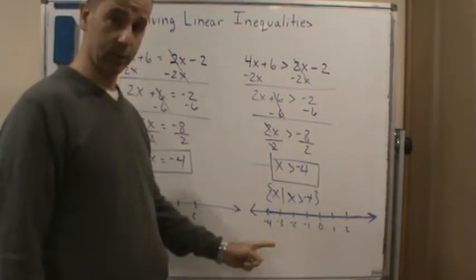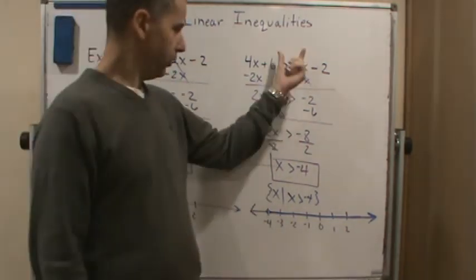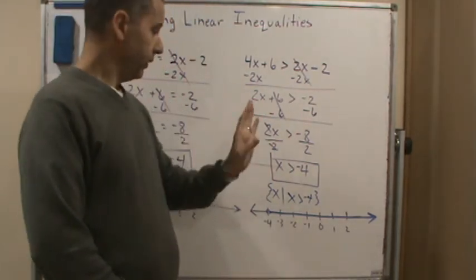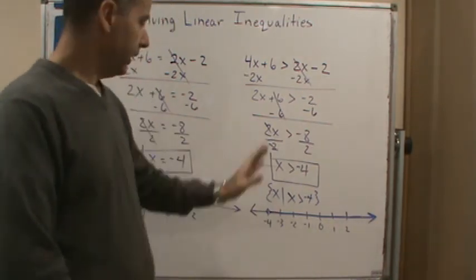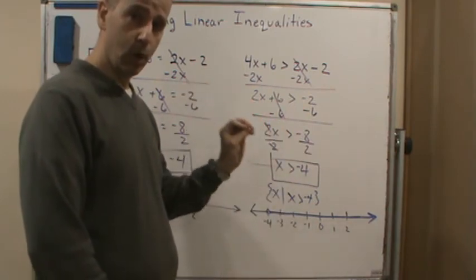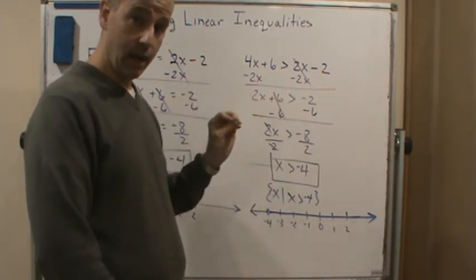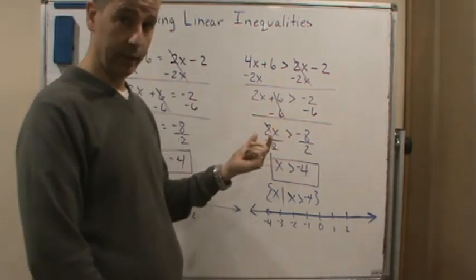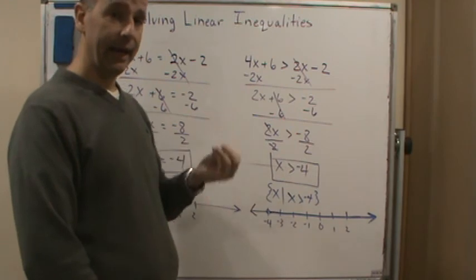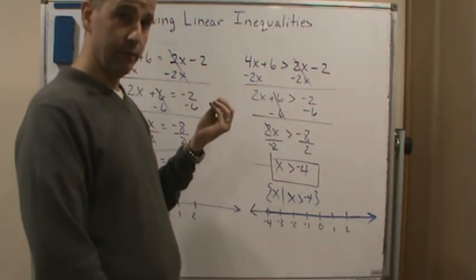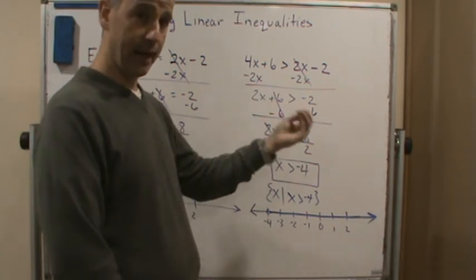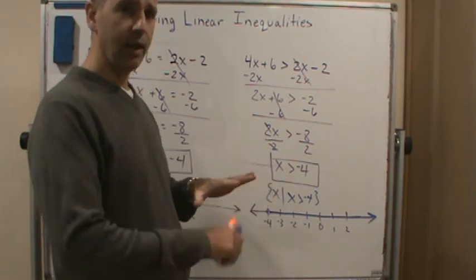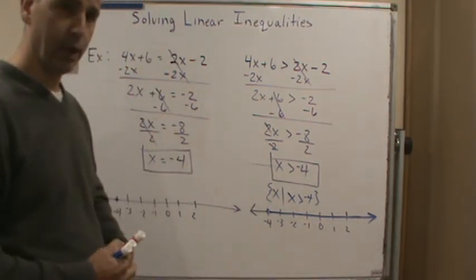So again, big difference dealing with inequalities versus equations when you're talking about the solution, but you solve them very similarly. The only difference is you have an equal sign for equations and an inequality sign here. The one warning you have to watch out for — and I'll probably repeat this again — is the only thing you have to watch out for is when you multiply or divide both sides of an inequality by a negative number, you must flip the inequality. As long as you remember that, you can solve these just like you do with an equation.